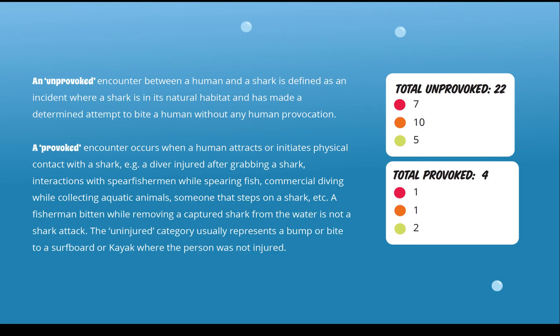Incidents are also divided into unprovoked and provoked encounters. An unprovoked encounter is defined as one where a shark in its natural habitat makes a determined attempt to bite a human without the human provoking the shark. A provoked encounter is when a human attracts or initiates physical contact with the shark — such as spearfishing, diving, grabbing a shark, or taking a shark off a hook. The uninjured category usually represents just a bump or bite to a surfboard where the person was not injured.